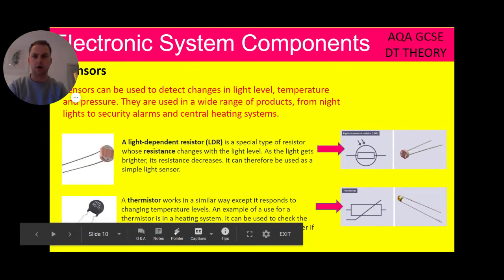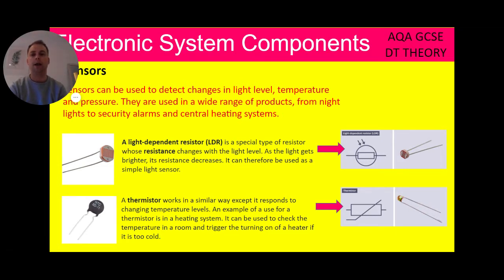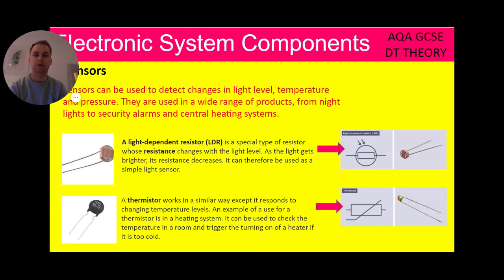Let's move on to sensors. Sensors can be used to detect changes in light level, temperature and pressure. They are used in a wide range of products from nightlights to security alarms and central heating systems. A common question in the exam is to describe how a light dependent resistor works. A light dependent resistor, or LDR, is a special type of resistor whose resistance changes with the light level. As the light gets brighter, its resistance decreases. It can therefore be used as a simple light sensor.